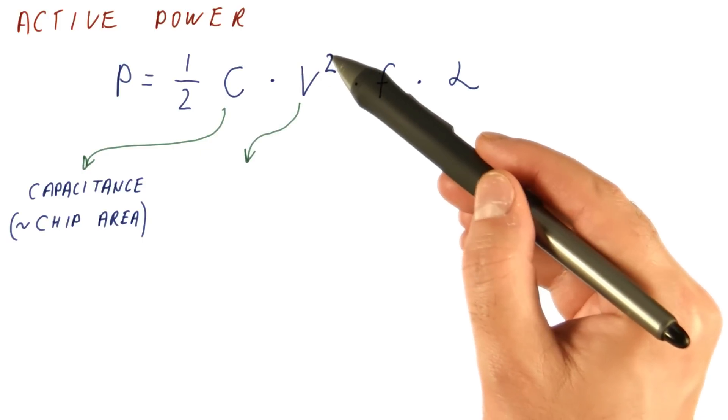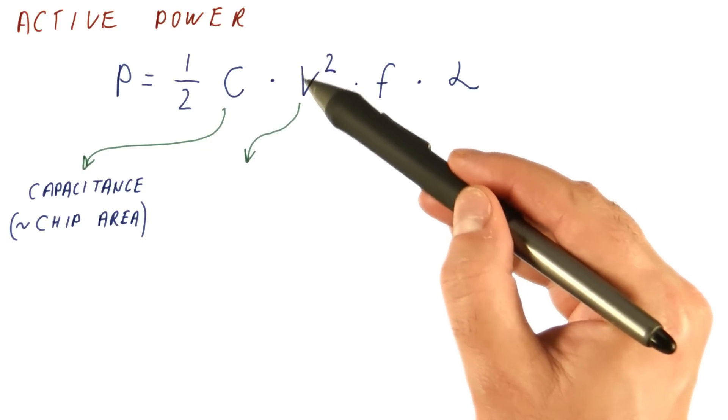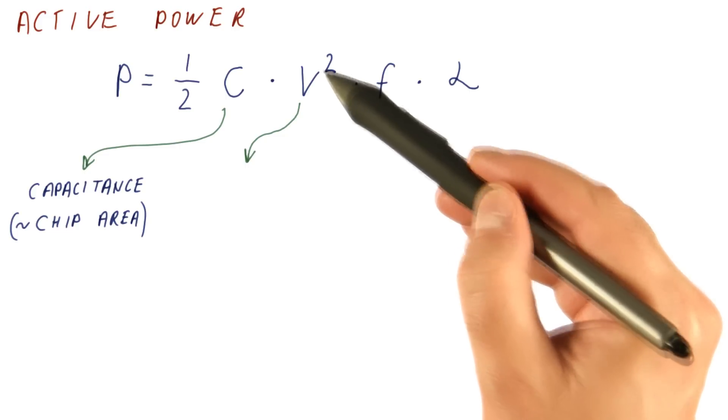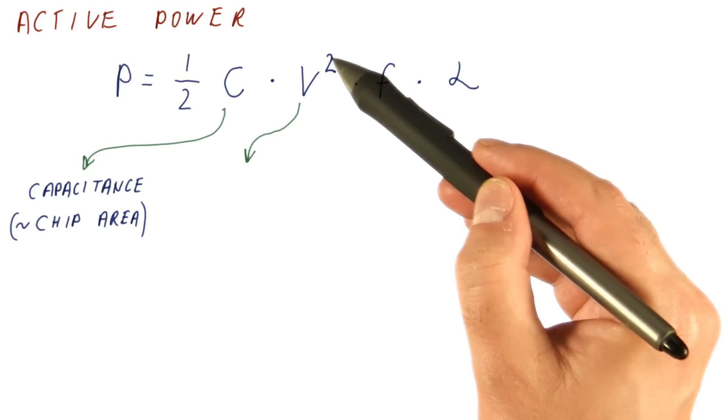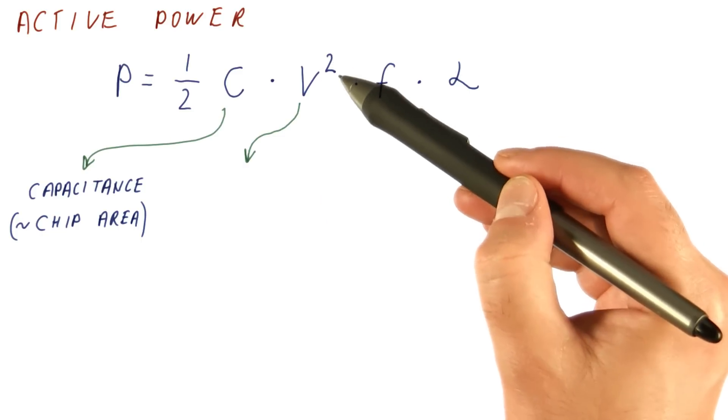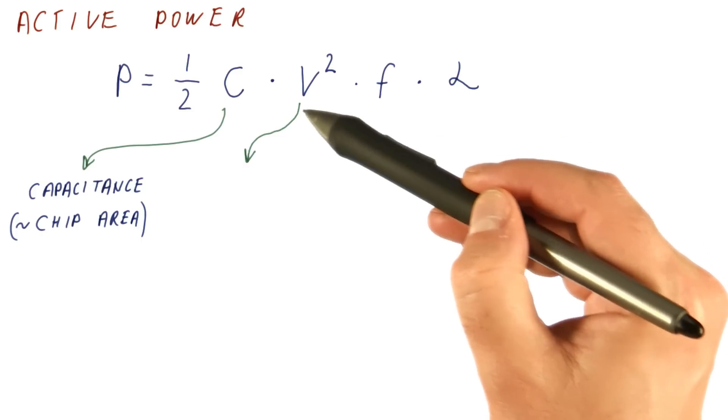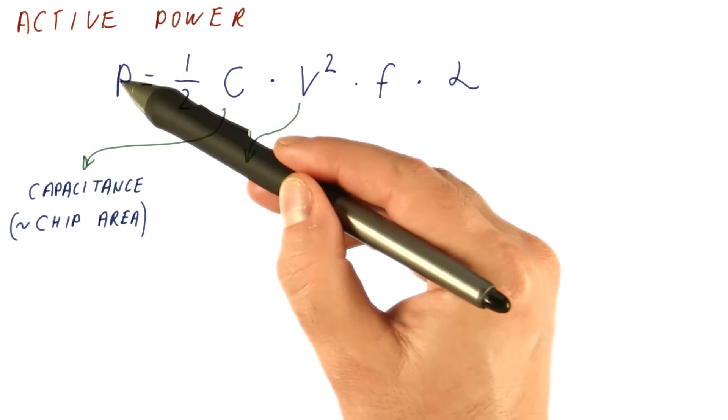The next factor is voltage squared. This is the power supply voltage. The higher the power supply voltage, the higher the power is, and this relationship is quadratic. So doubling of the power supply voltage will actually quadruple the power.